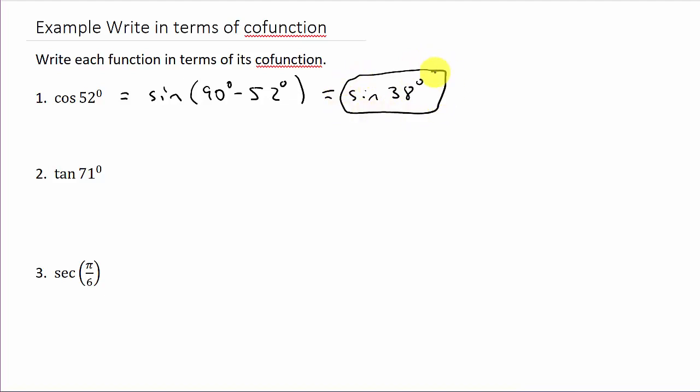A lot of trig books have these kind of problems. Let's look at tangent of 71 degrees. The cofunction for tangent is cotangent, so that's cotangent of 90 degrees minus 71 degrees, which gives us cotangent of 19 degrees.